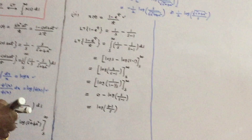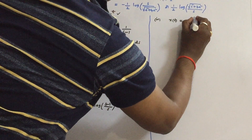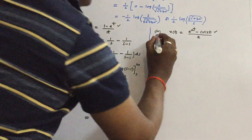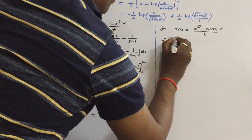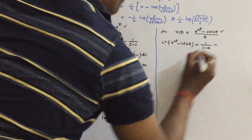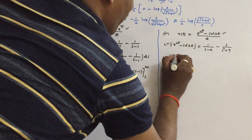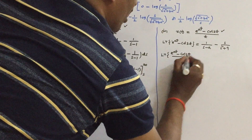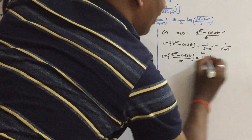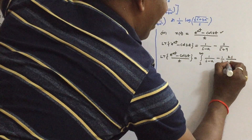Let us take the fourth problem. X(T) is equal to (e^(at) minus cos(3t)) by T. Find the Laplace transform of the numerator: the Laplace transform of e^(at) is 1/(S−a) and the Laplace transform of cos(3t) is S/(S² + 9). Applying the division by T property, integrate from S to infinity: [1/(S−a) minus (1/2)(2S/(S² + 9))] dS.